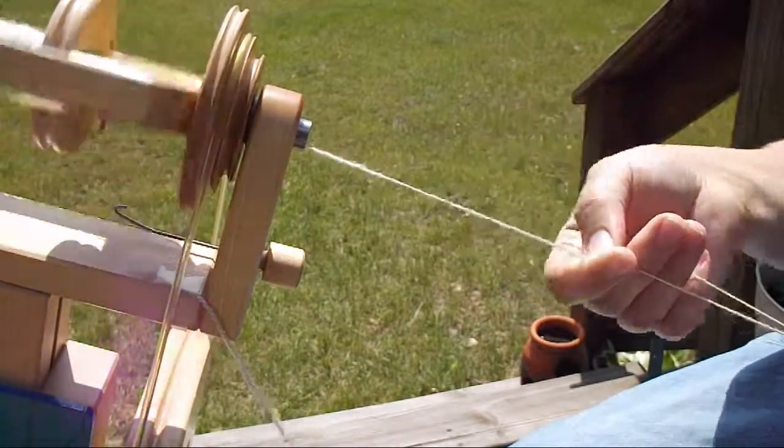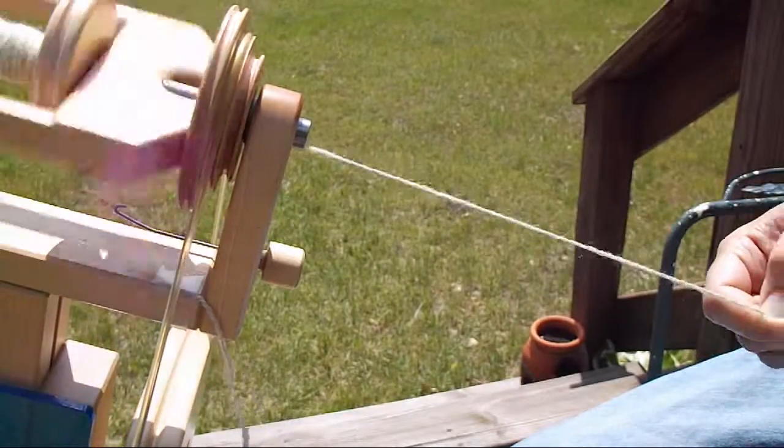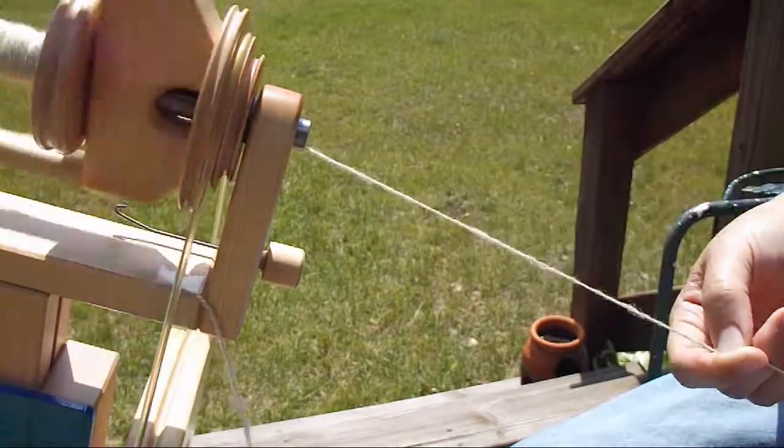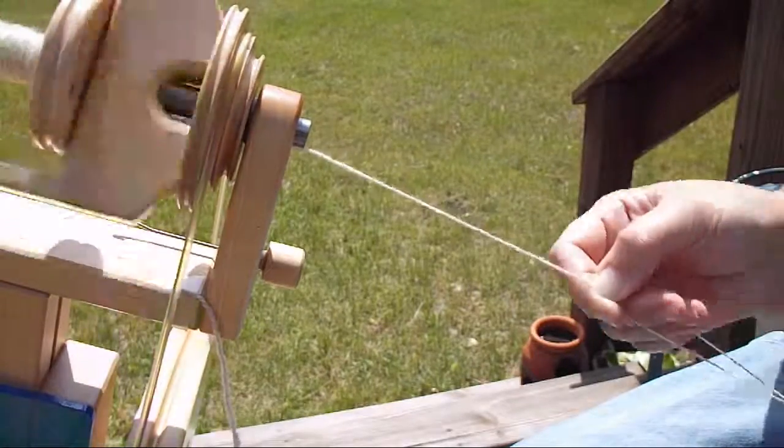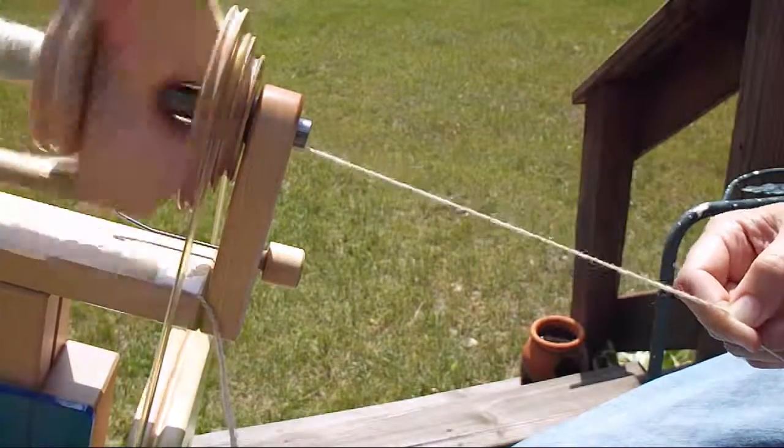...the twist continues to level out or equalize over the whole length of yarn reaching all the way back to where my hand is holding and I have that twist pinched off by my thumb and my forefinger.